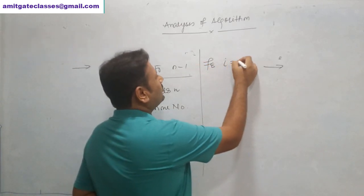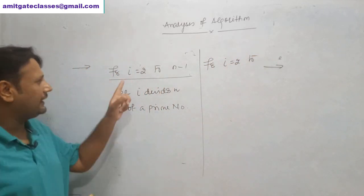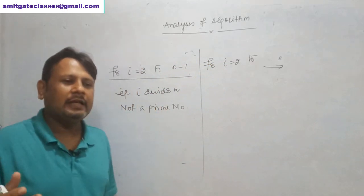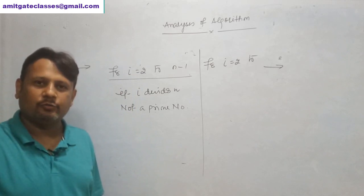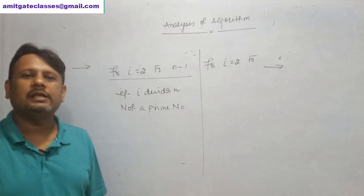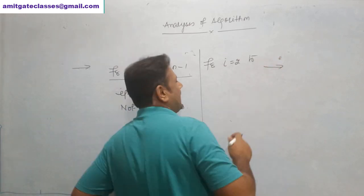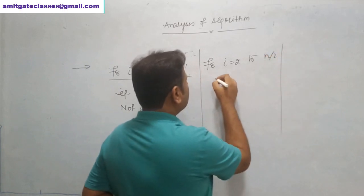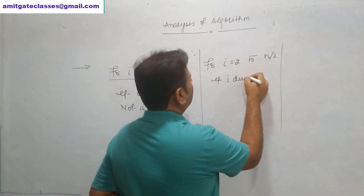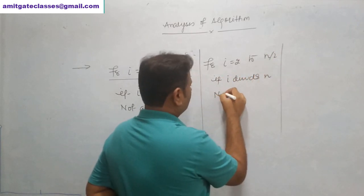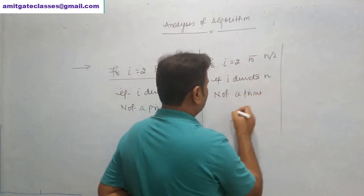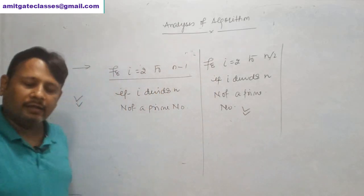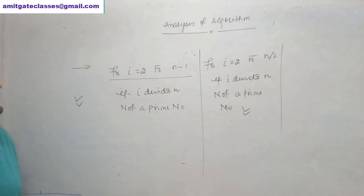Another student says: there is no point dividing from 2 to n minus 1, because after a certain level every number is just twice the previous. So he gives a different solution: for i equals 2 to n/2 — if i divides n, then it is not a prime number. This is also a valid solution.